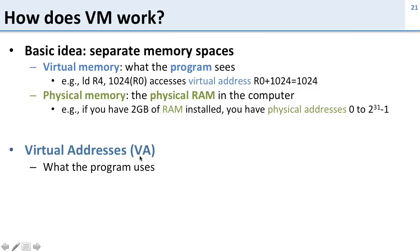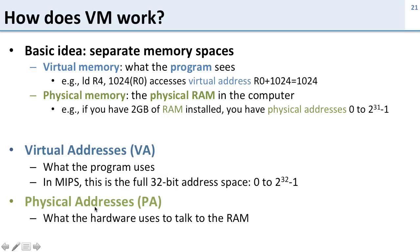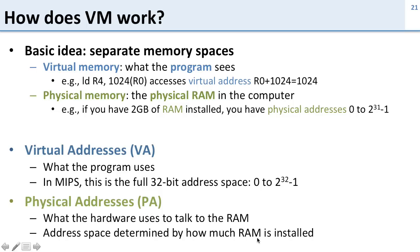Virtual addresses, or VA, are what the program uses. In MIPS, it's a 32-bit address space. Physical addresses, or PA, are what the hardware uses to talk to the RAM, and this is determined by how much RAM you have installed. If you only have a little bit of RAM, your physical address space is going to be small. If you have a lot of RAM, it's going to be big. Each program has its own virtual address space, and we have a physical address space for our memory.